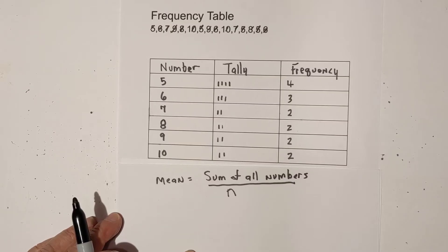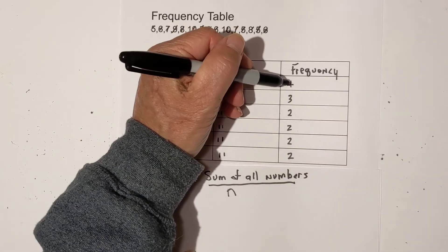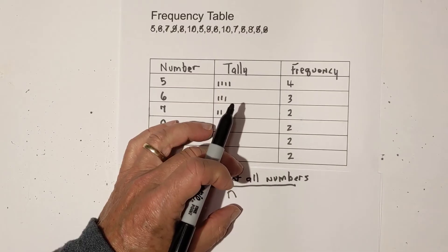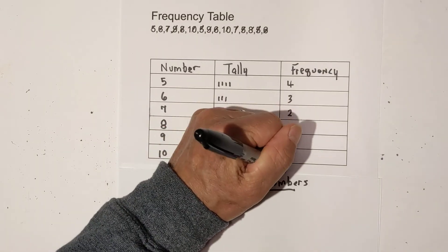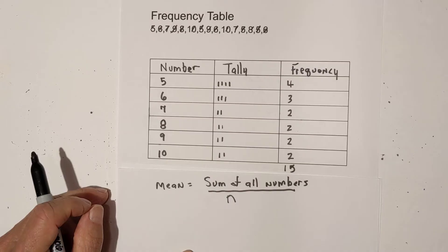So to find n, all I have to do is total up this column, and that is 15, because I have 15 numbers in my data set.